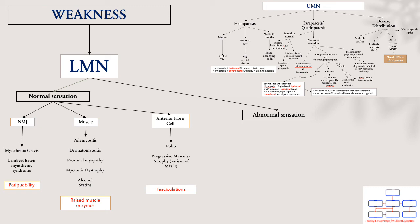In muscular disorders, you will classically find raised muscle enzymes such as creatine kinase. Conditions that could cause this pattern include polymyositis, dermatomyositis, proximal myopathy, myotonic dystrophy, or alcohol and statin use. Lesions in the anterior horn cells — such as polio and progressive muscular atrophy, a variant of motor neuron disease — will characteristically have fasciculations.